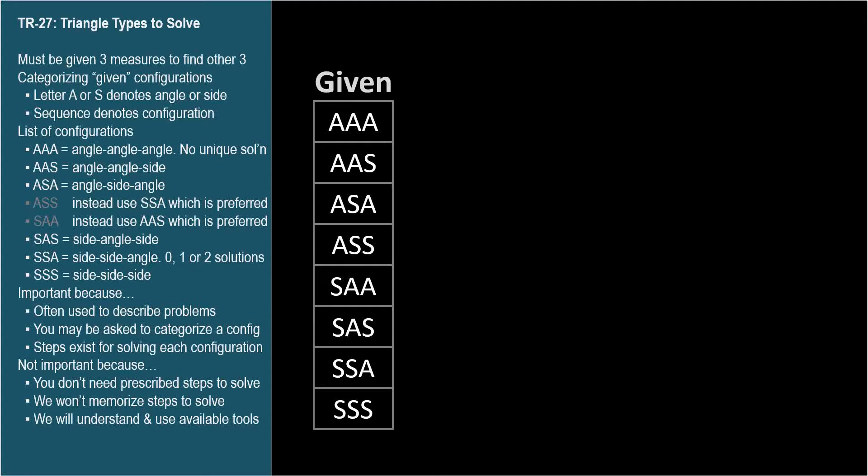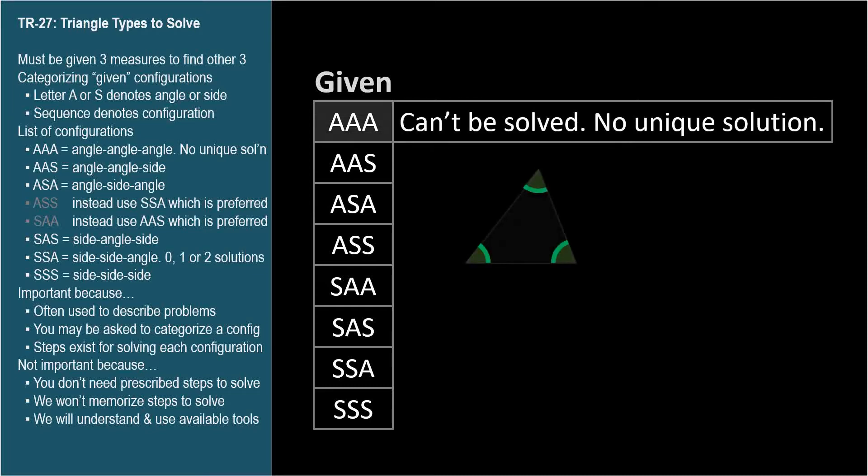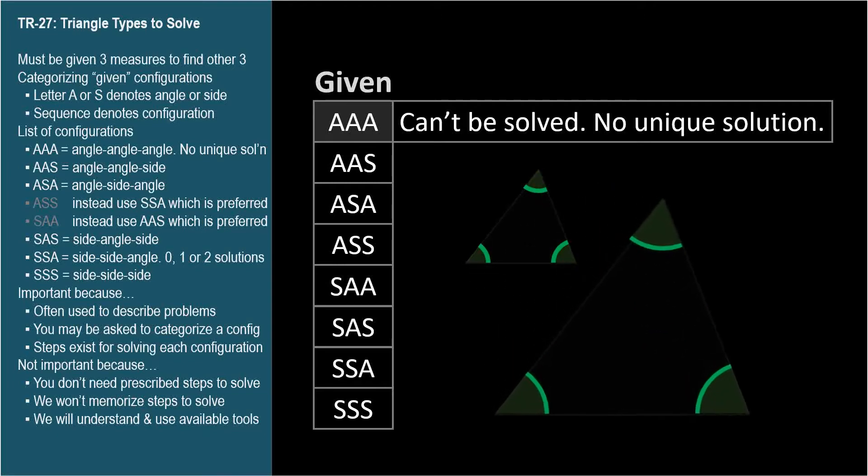The AAA triangle is one for which we know only the three angles. Ironically, the list starts with one of the two special cases. AAA triangles are special because they cannot be solved. There are infinitely many similar triangles, all of different sizes, having the same three angles. So without knowing at least one side, a triangle cannot be solved. And angle, angle, angle is the only configuration where no side is known. Everybody else has at least one S.